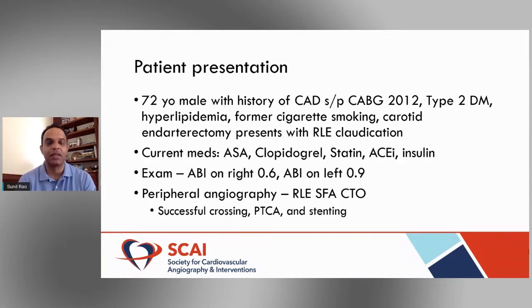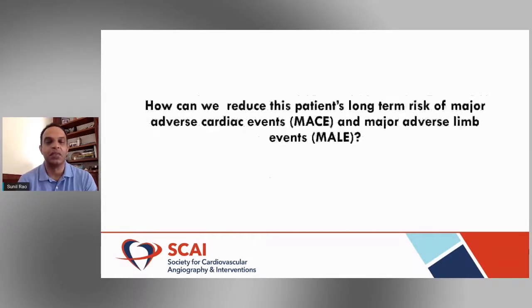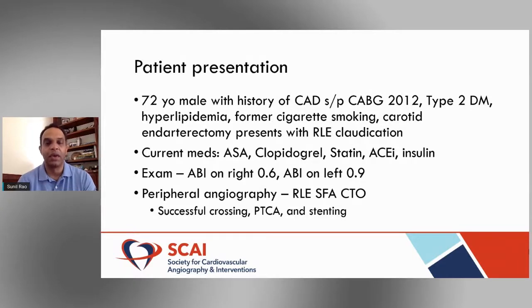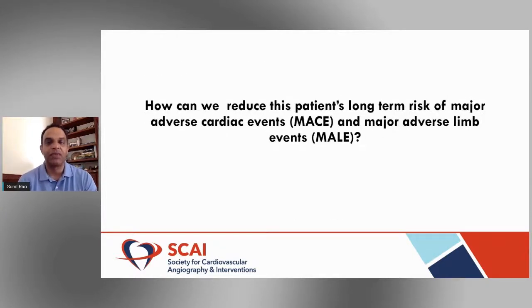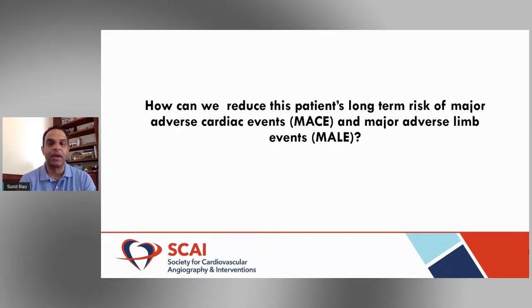This patient has what we term polyvascular disease — coronary disease, cerebrovascular disease, and now clinical evidence of peripheral arterial disease. He's maintained on aspirin and clopidogrel, a statin, ACE inhibitor, and insulin for his diabetes. His exam shows a problem in the right lower extremity with an ABI of 0.6. Peripheral angiography showed a right lower extremity SFA CTO that was successfully crossed, ballooned, and stented due to a large dissection.